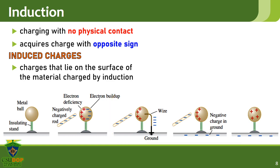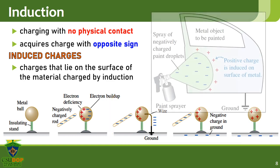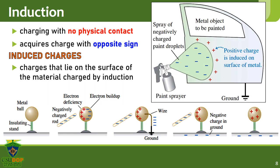An essential application of induction is in electrostatic painting. The spray of paint is negatively charged, and the metal object to be painted is grounded, making it positively charged. In this manner, the paint will become more adhesive to the object since negative charges attract positive charges.